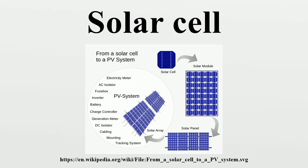Solar-specific feed-in tariffs vary by country and within countries. Such tariffs encourage the development of solar power projects. Widespread grid parity — the point at which photovoltaic electricity is equal to or cheaper than grid power without subsidies — likely requires advances on all three fronts. Proponents of solar hope to achieve grid parity first in areas with abundant sun and high electricity costs such as in California and Japan. In 2007, BP claimed grid parity for Hawaii and other islands that otherwise used diesel fuel to produce electricity.